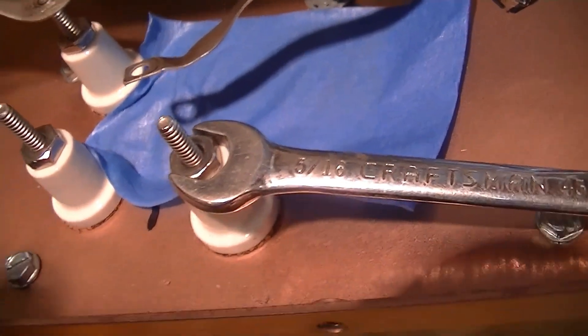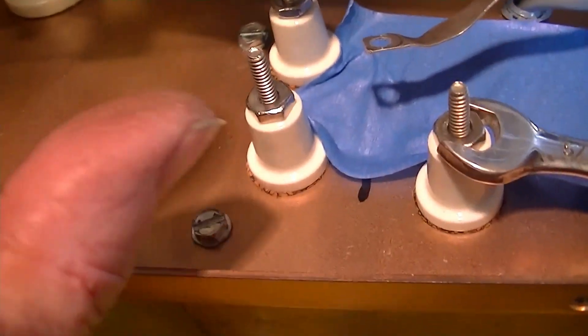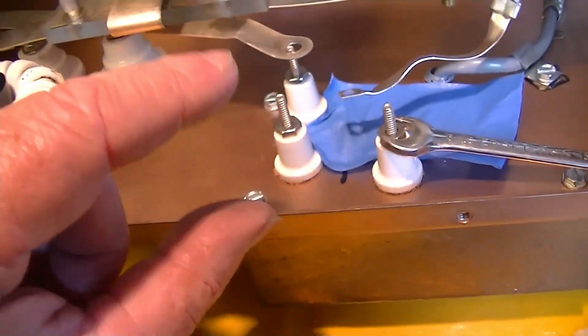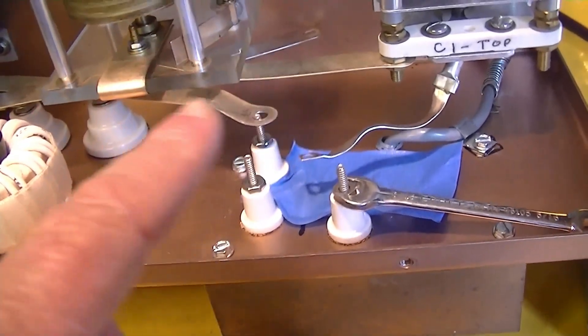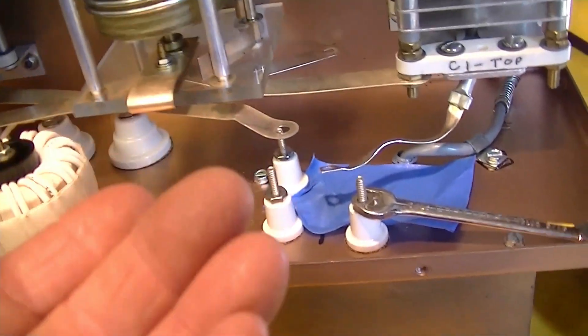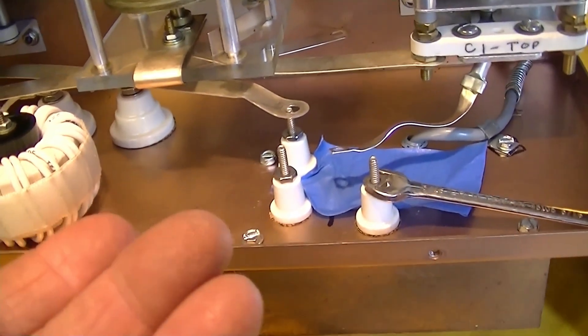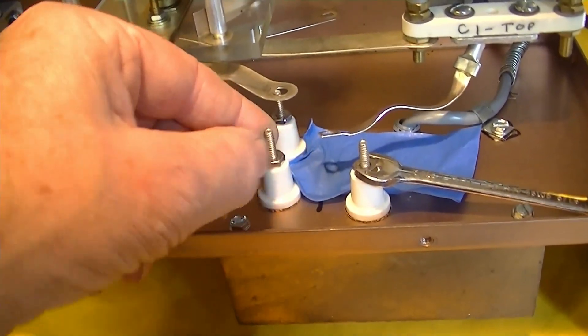Remember you want to get these nuts here, these 5/16ths nuts good and tight. These ceramic posts are in compression. They're plenty tough and remember there's a curved piece of bus bar down in there. You want that sucked up all the way so that it can't contact the switch.